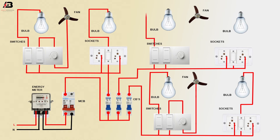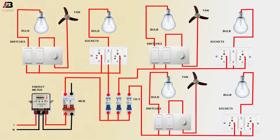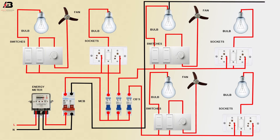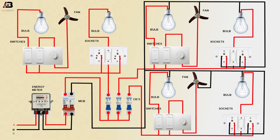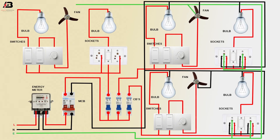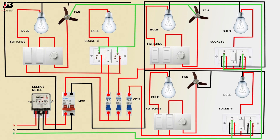Also another room: phase connection outgoing from switches to bulb, phase connection outgoing from switches to regulator to fan. Also a connection outgoing from switches to bulb. Neutral connection outgoing from MCB neutral point to all the load and socket neutral connection. Also an earth connection to all socket earth points and also connected to the load like fan. Neutral connection outgoing from another room, all load connection and socket connection.